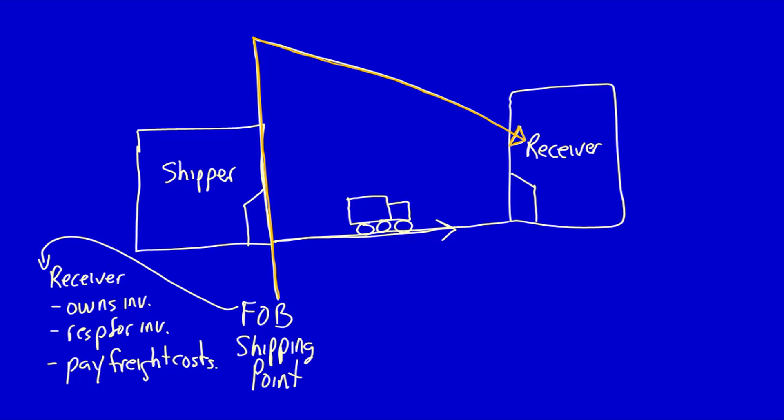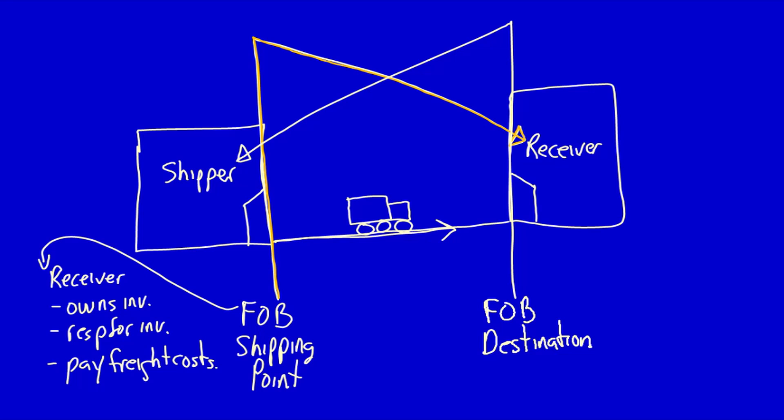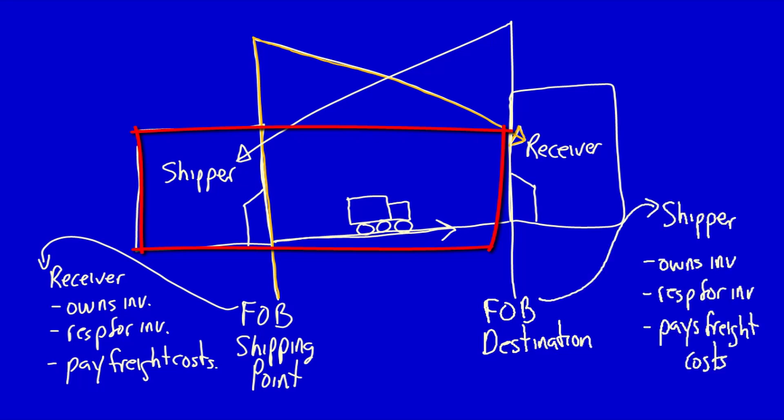You can imagine what it means if the shipping terms are FOB destination. Remember the definition of FOB — free on board to the receiver — so it's free to the receiver while it's in transit, until it arrives at the receiver's doors, the destination. That means the shipper owns the inventory, is responsible for it, and pays the freight costs. If product is shipped FOB destination, the shipper owns the inventory while it's on the truck. If it's damaged in transit, the shipper is responsible for replacing it, and the shipper pays all freight costs. That's why the arrow for FOB destination points at the shipper — it's the shipper's problem while it's in transit.